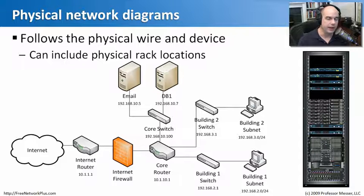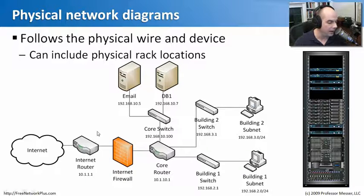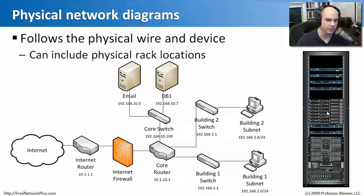There's also a need for physical network diagrams. It's important to have a layout of exactly what's connected where. This can include a picture showing which router is connected to which firewall, connected to which other router, connected to which core switch — and you can track back inside that facility exactly where these things are located. You can also combine that with a very detailed picture showing switches, routers, firewalls, and servers physically in the rack, so that if you went into the room and looked at that rack, it would look exactly like the drawing.